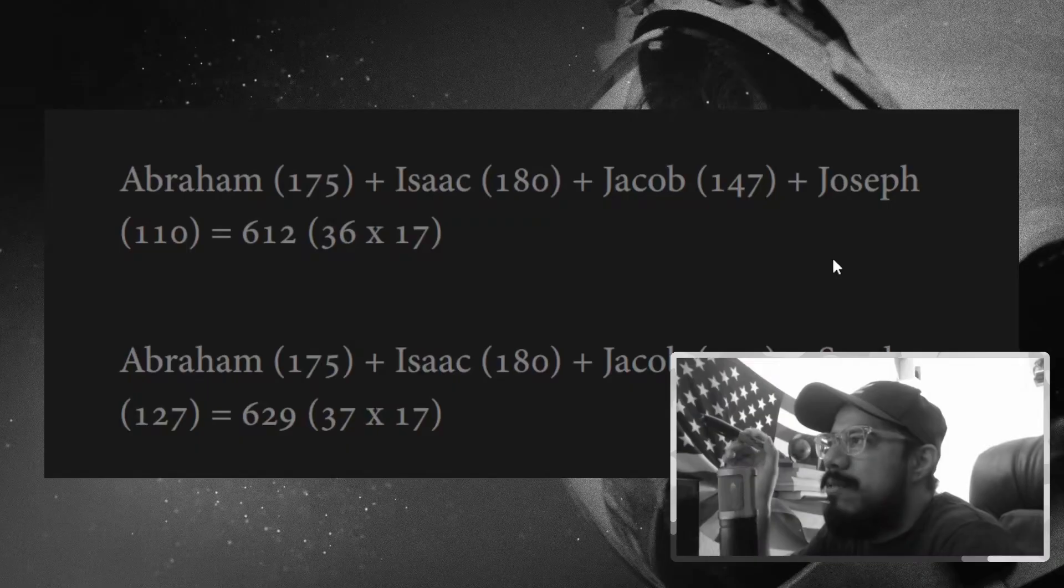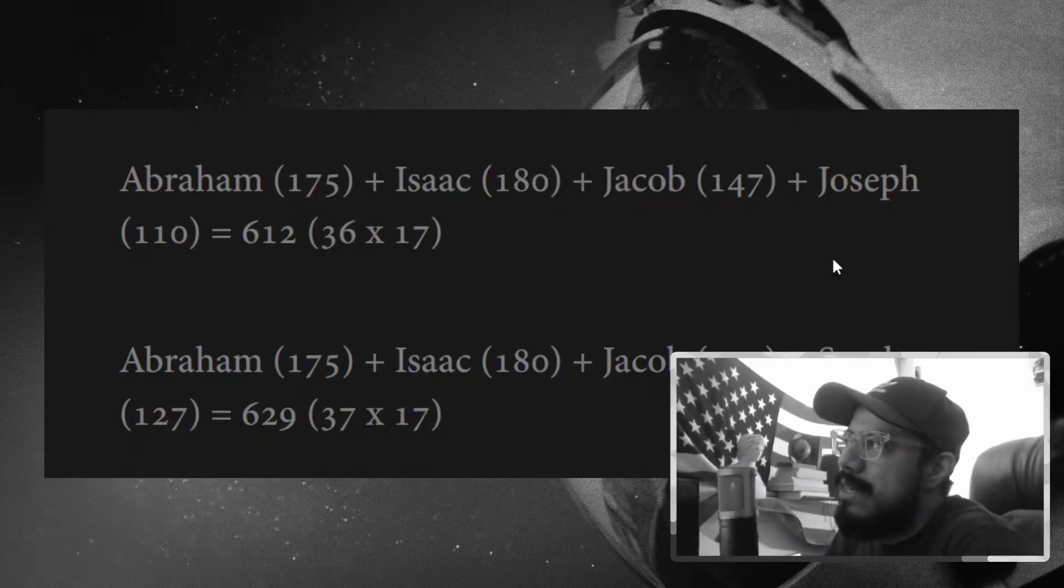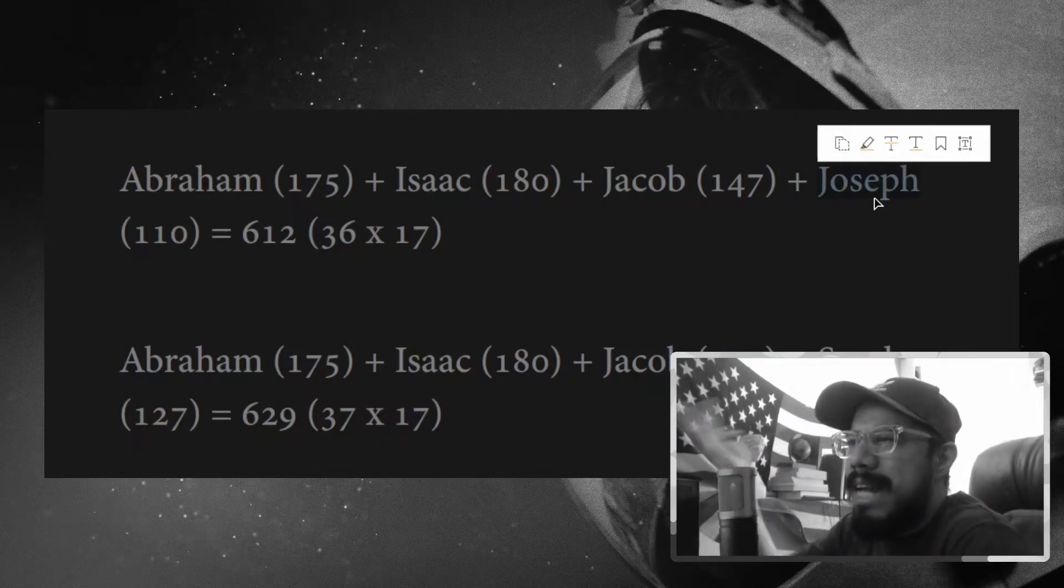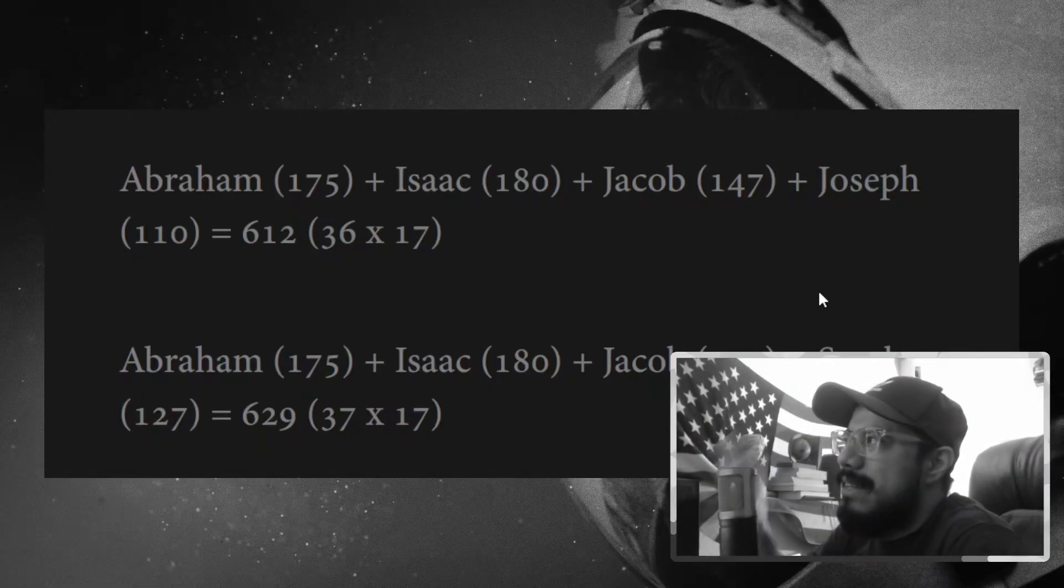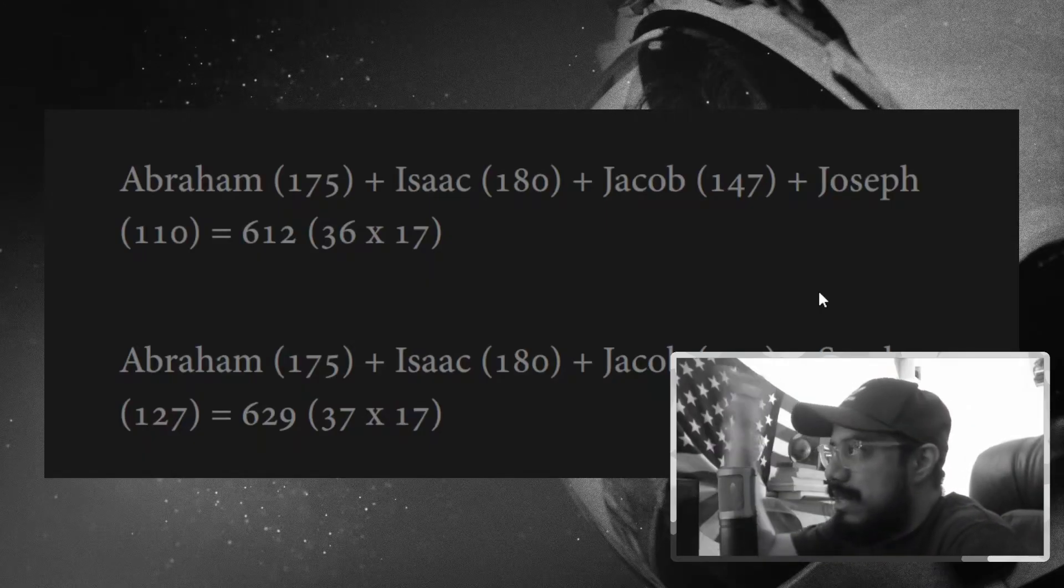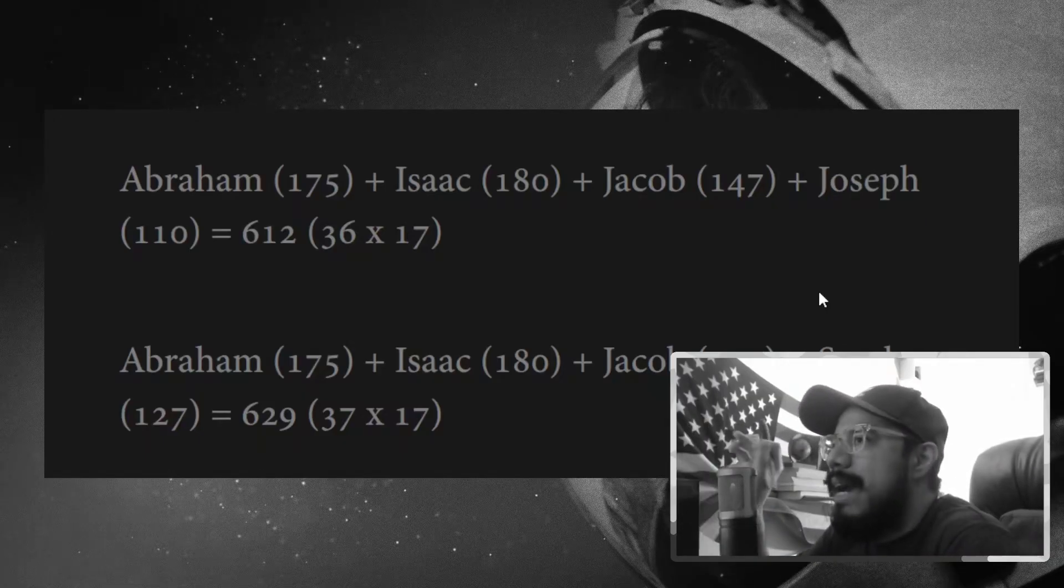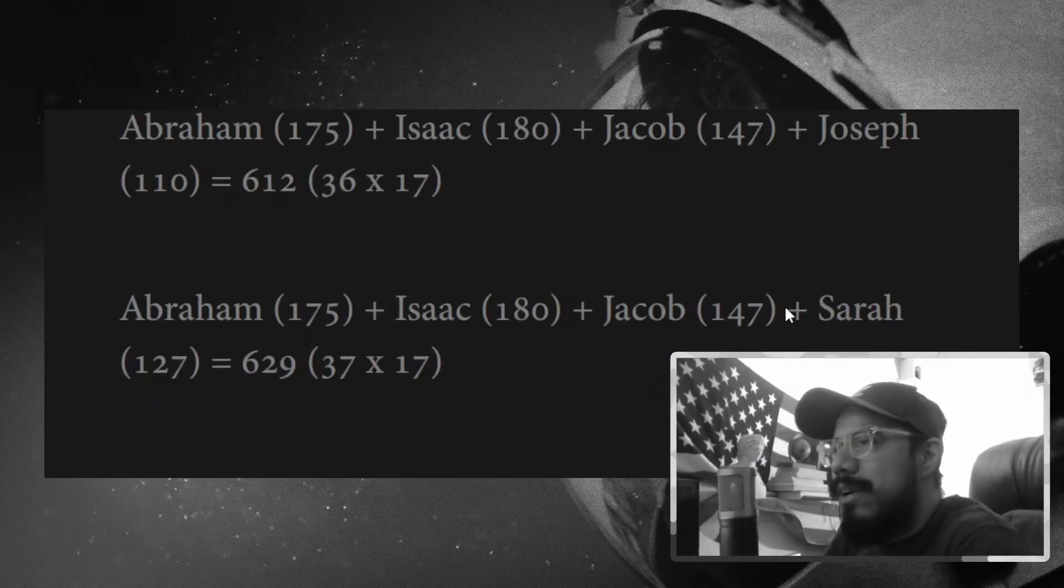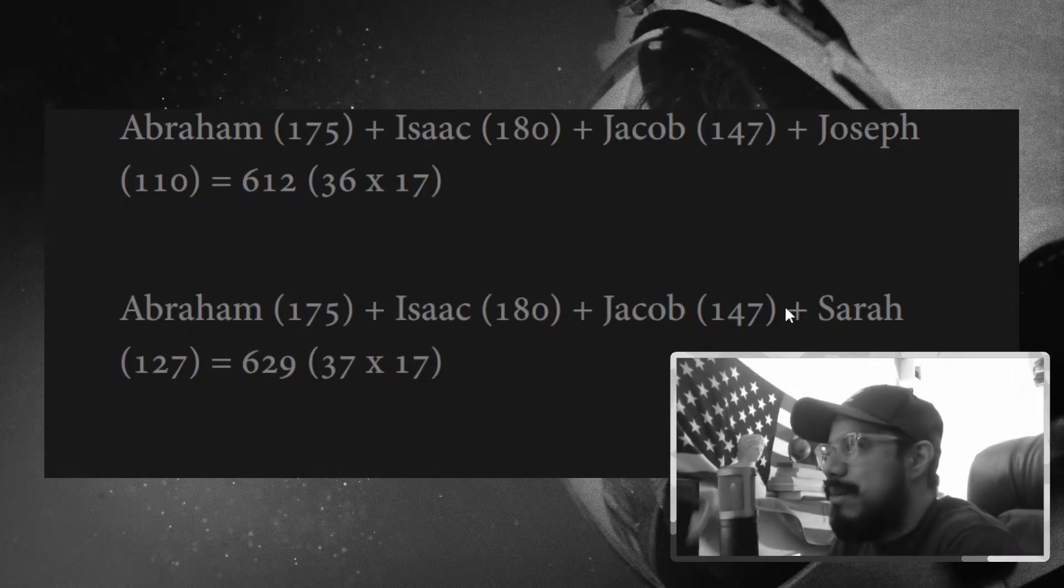The other thing we noted was the fact that Abraham, Isaac, Jacob, and Joseph, their total lifespan was 612, which is 36 times 17. And of course, Joseph is interesting because in many ways he is kind of the end of the patriarch, the age of the classical patriarchs, because that's the end of Genesis. We move into Exodus. And then from that point on, it's like the nation is treated more as a group, as opposed to the individual patriarch that it's following that line through. But we did also note that if you substituted Sarah's lifespan, she lived 17 more years than Joseph. If we put her age into that group, we get 37 times 17 is the total lifespan of Abraham, Isaac, Jacob, and Sarah.